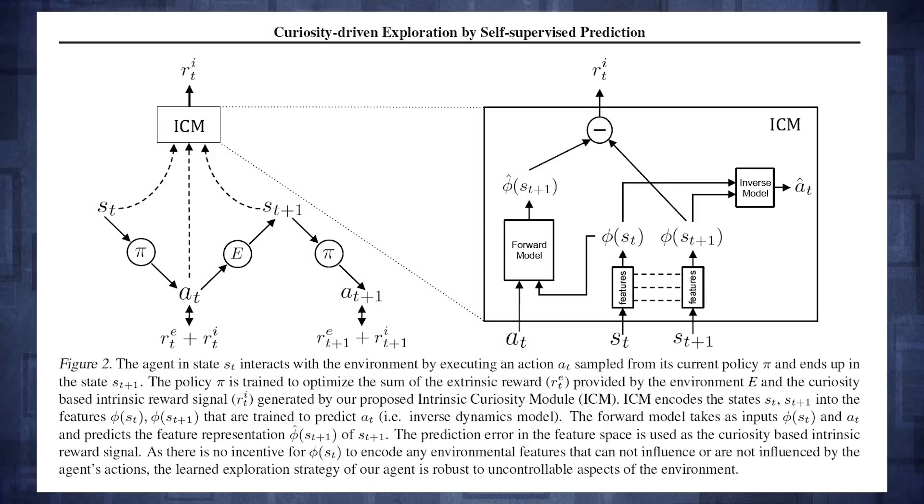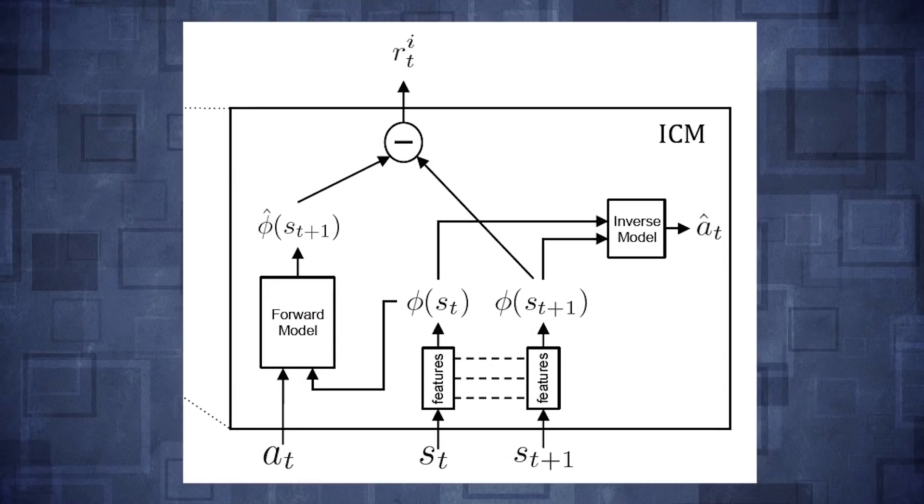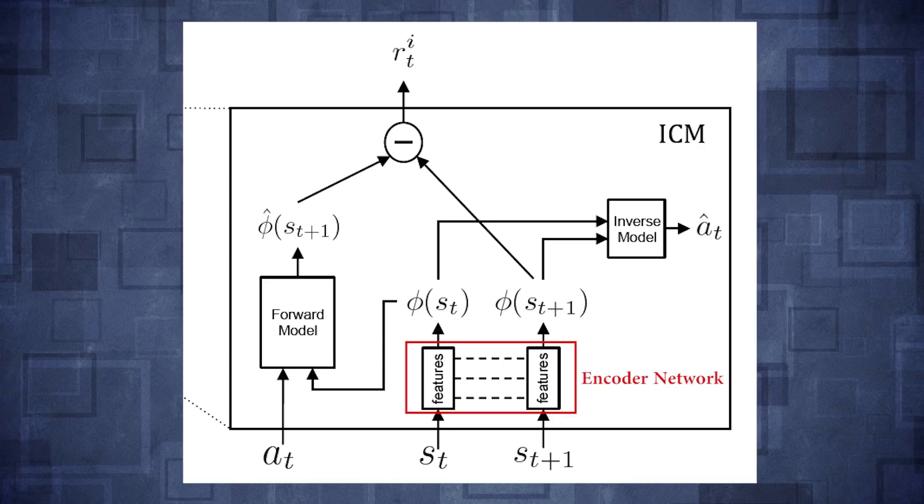And the underlying problem here is that the agent is not aware that there are some parts of the environment that it simply cannot control or predict. Okay, so here is what the intrinsic curiosity model in the paper looks like. The raw environment states s and s plus one are first encoded into feature space using a single shared encoder network.